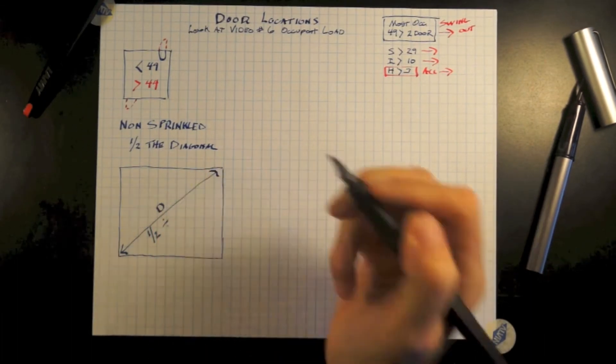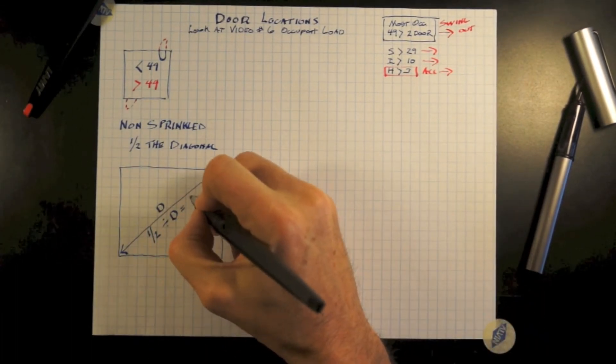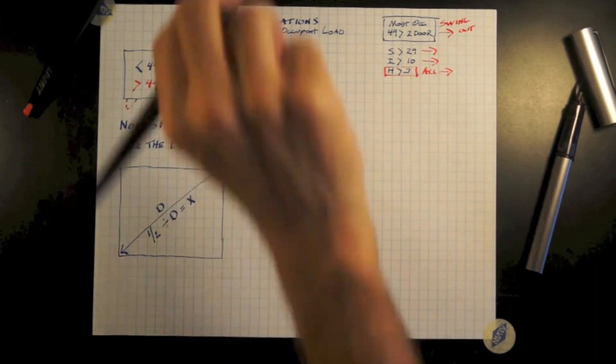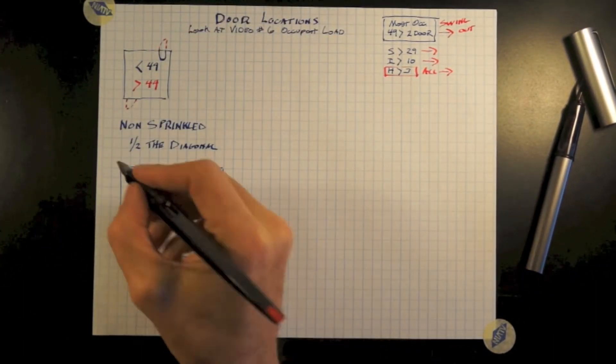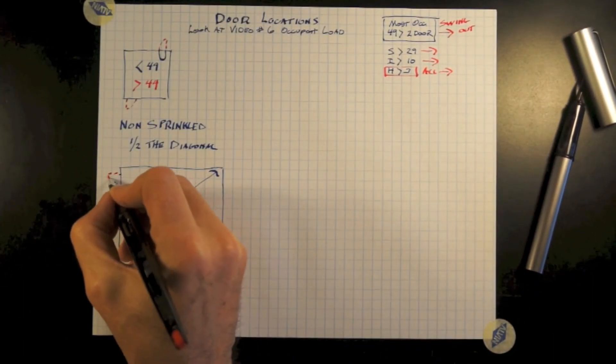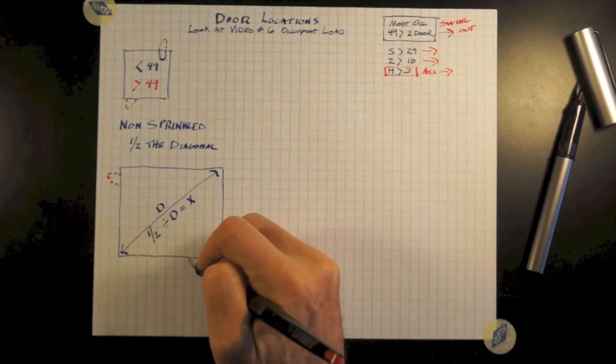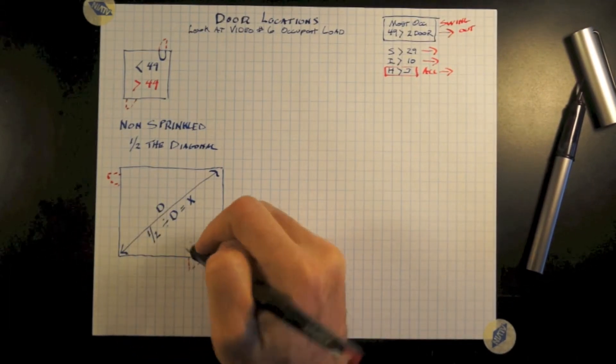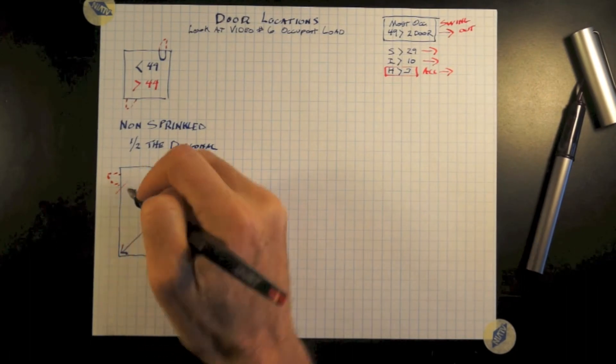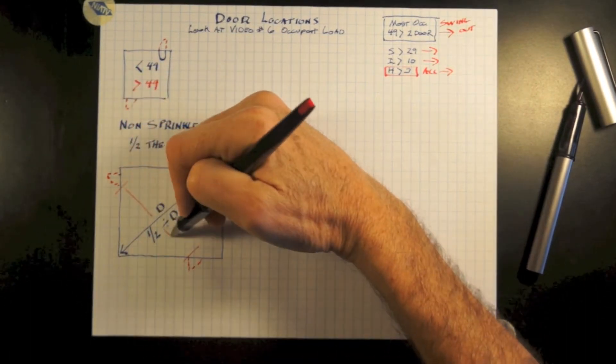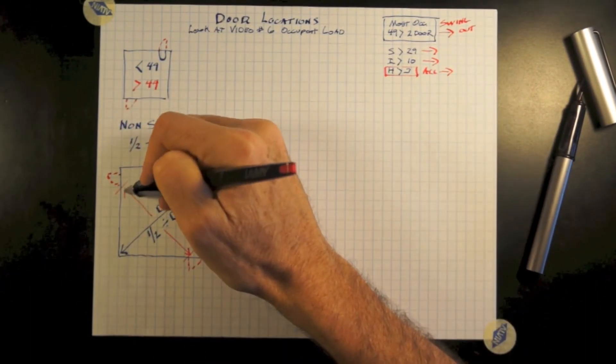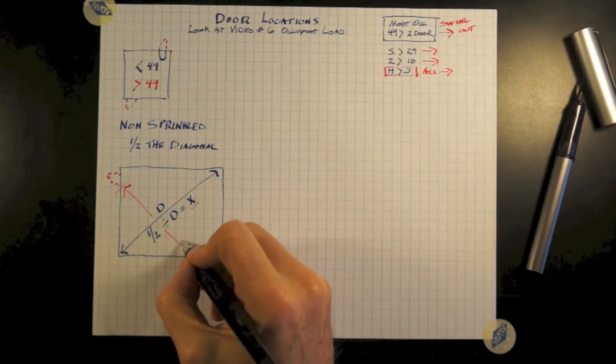So D being the diagonal, one half divided by the diagonal distance equals X. So therefore, our two doors exiting out of the space with the doors swinging in the direction of travel shall not be less than one half the diagonal distance or in other words, X.